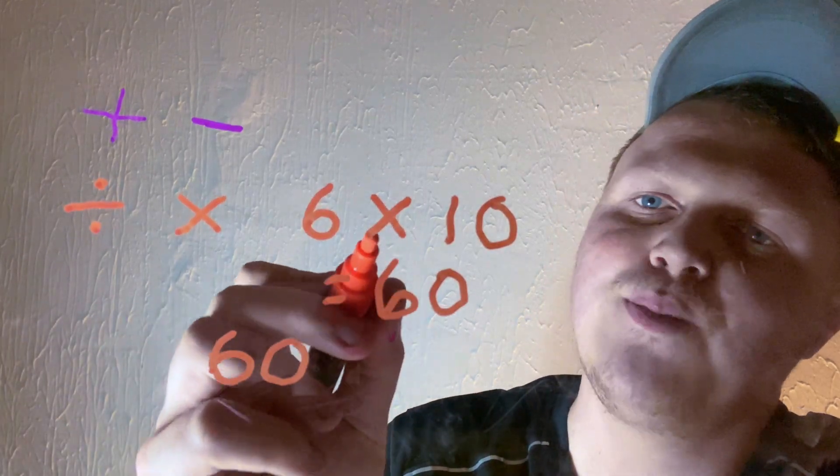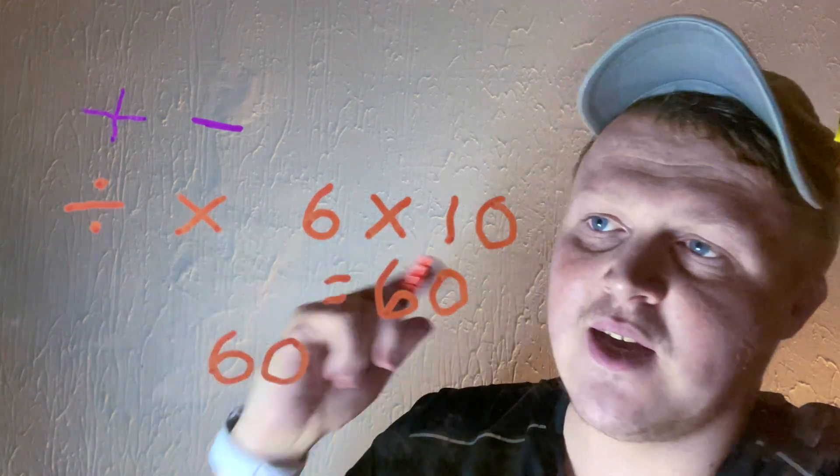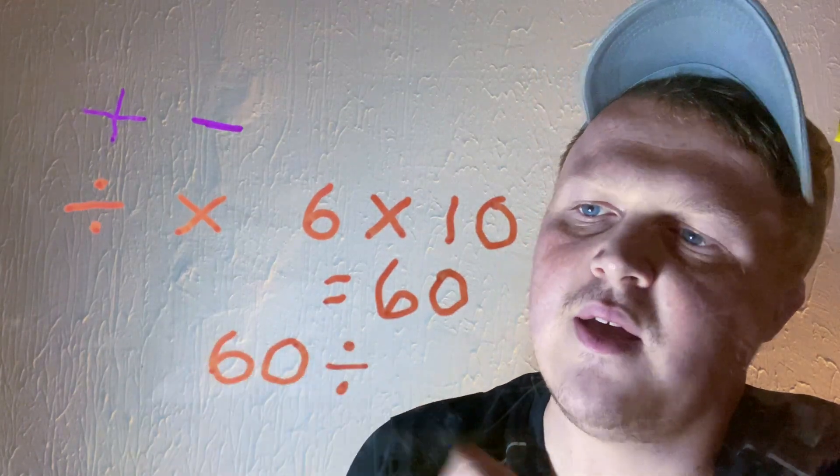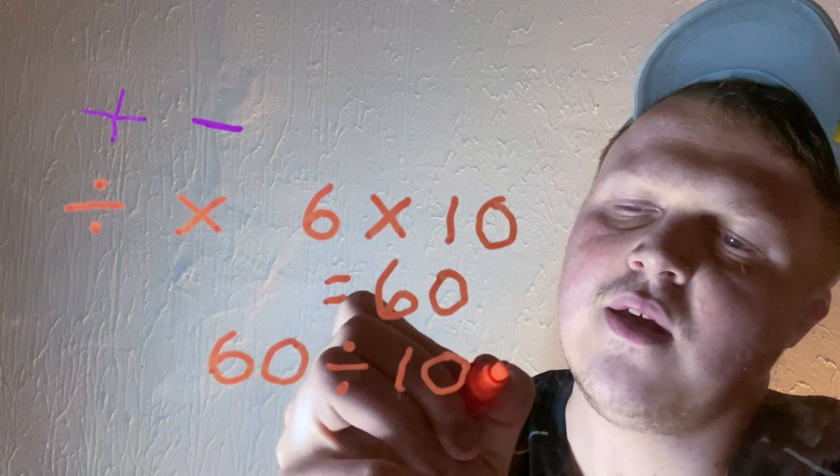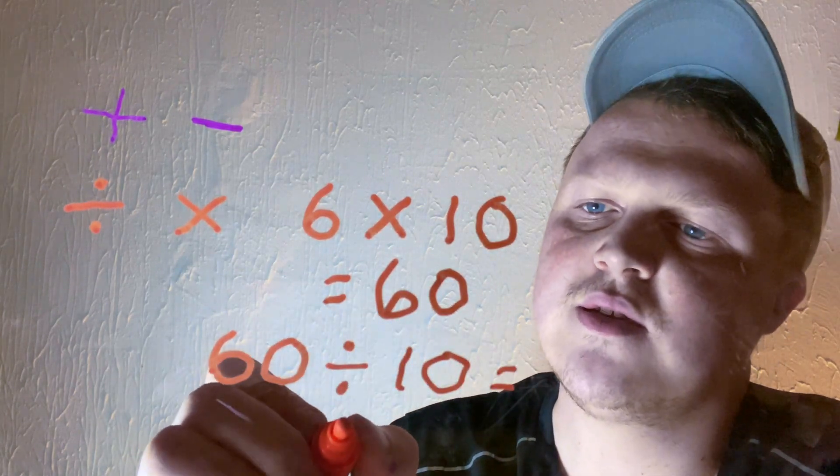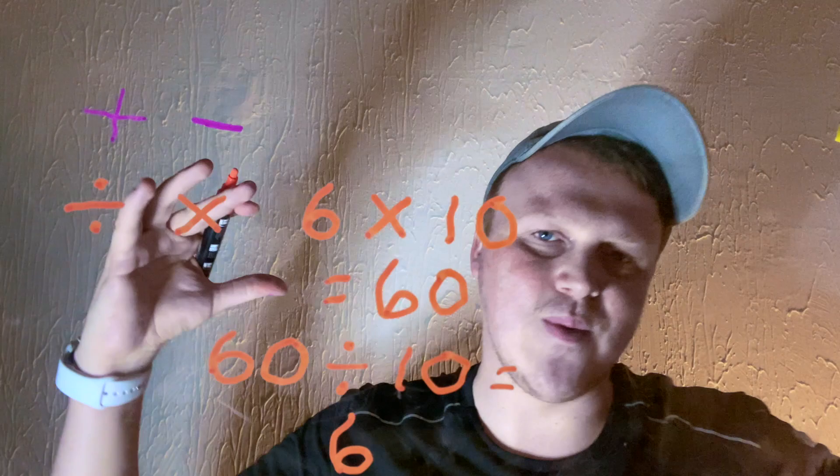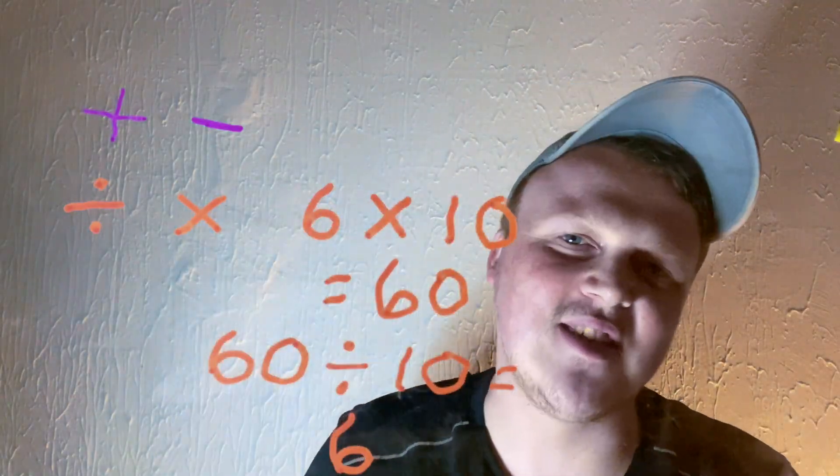Remember, take the last number first. What is the opposite of our operation? It's divide. 60 divided by 10 equals 6. Again, we've just used the opposite to check our answer.